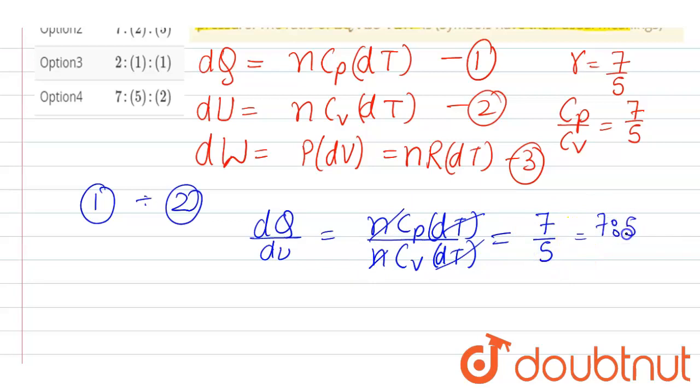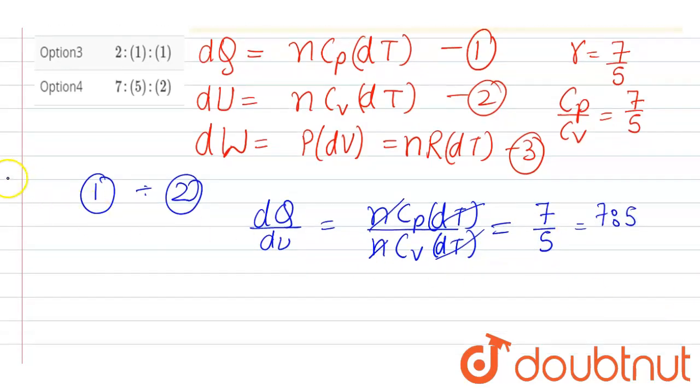That is, the ratio is 7 is to 5. Now on dividing second with third, that is dU upon dW.